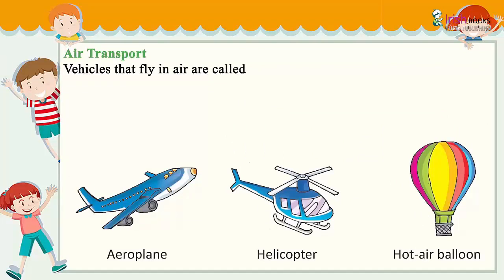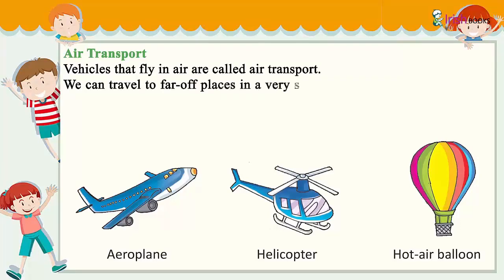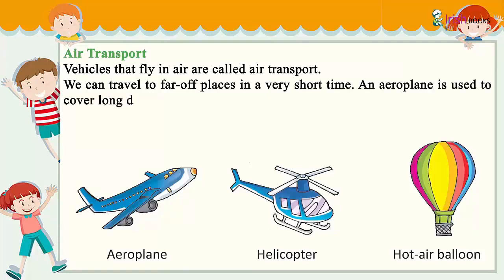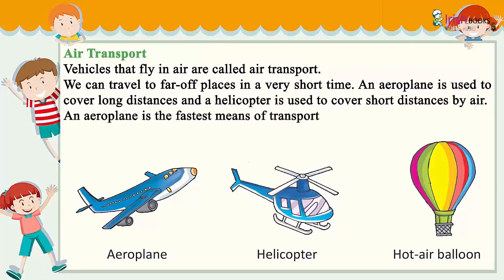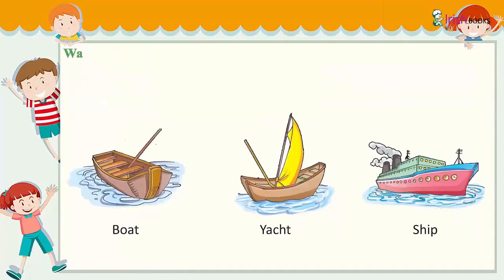Vehicles that fly in air are called air transport. We can travel to far off places in a very short time. An aeroplane is used to cover long distances and a helicopter is used to cover short distances by air. An aeroplane is the fastest means of transport.